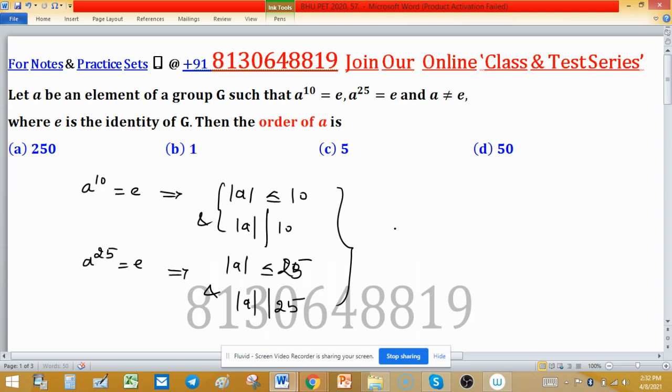Combine these two. It means that order of A is less than or equal to 10, and order of A divides the common factor of 25 and 10. It means order of A will be the common factor of 25 and 10.